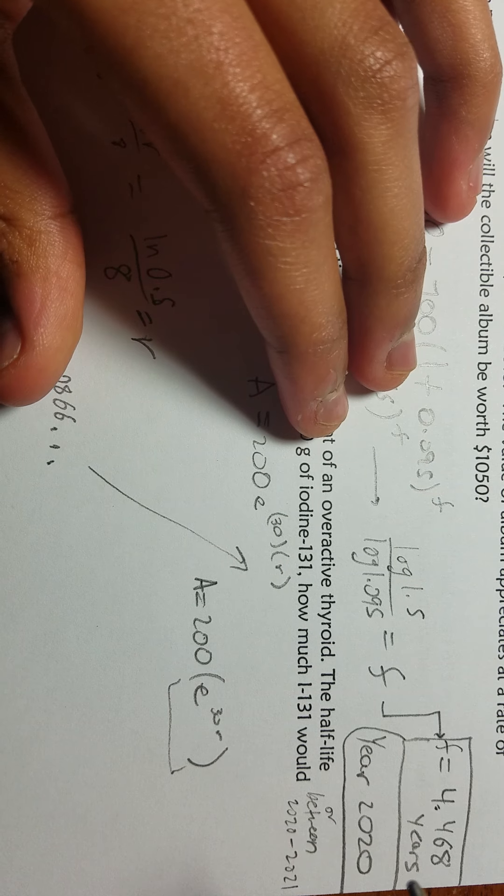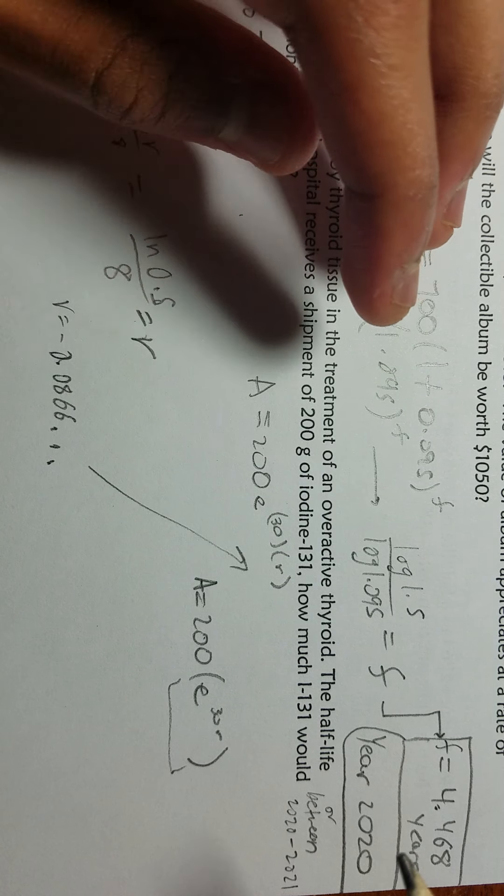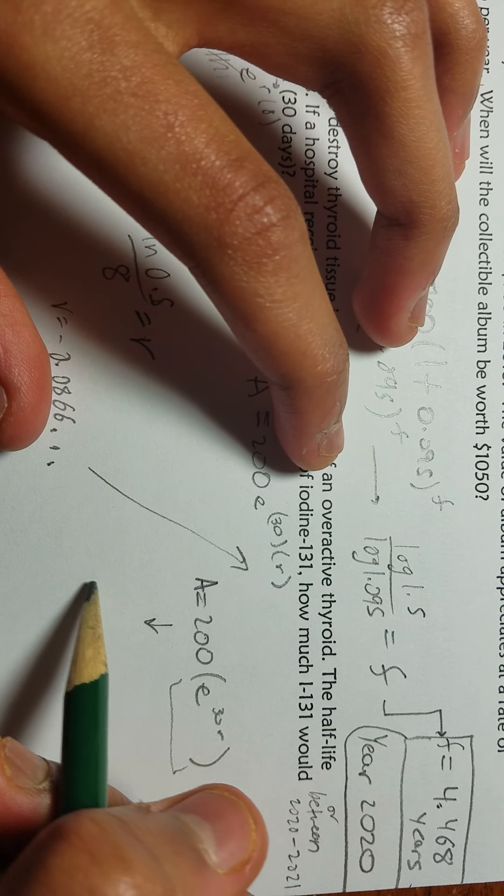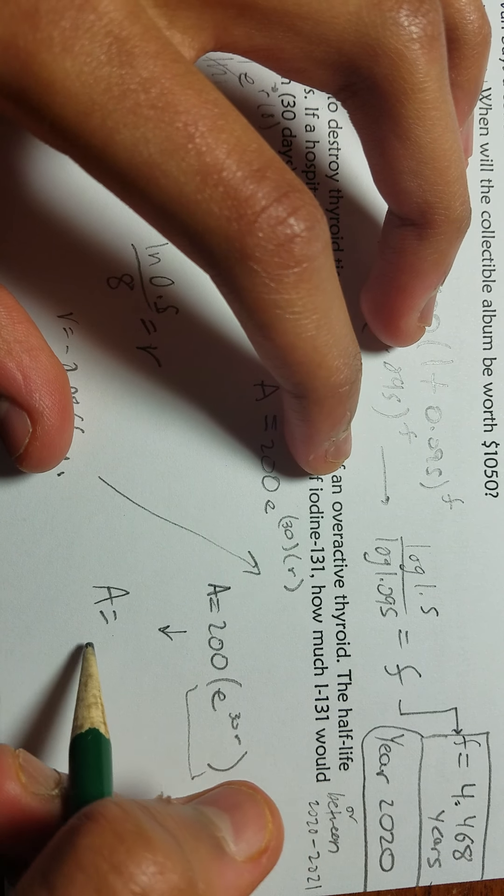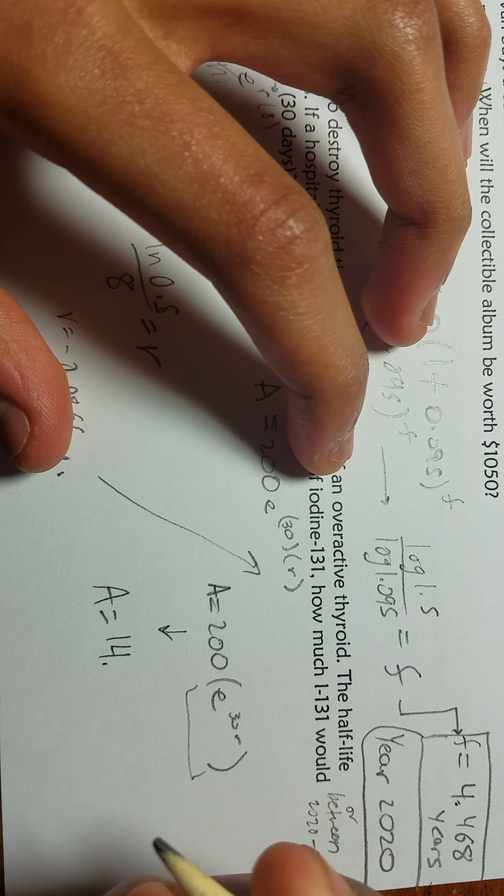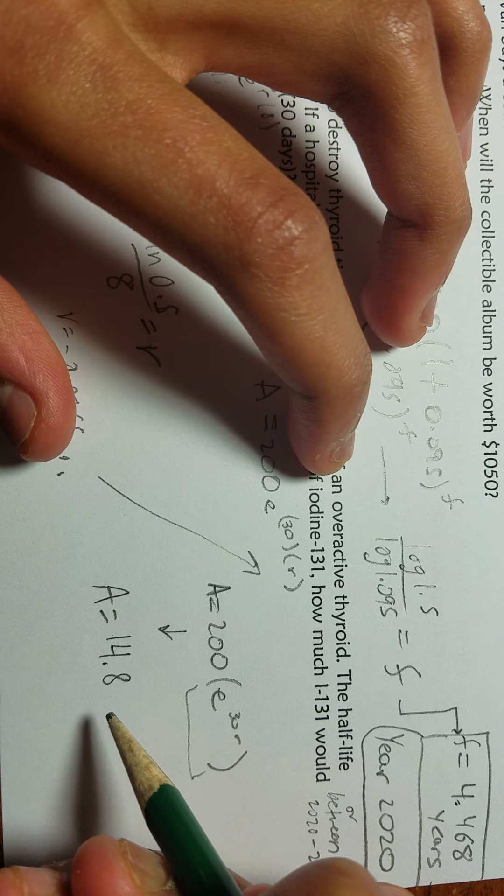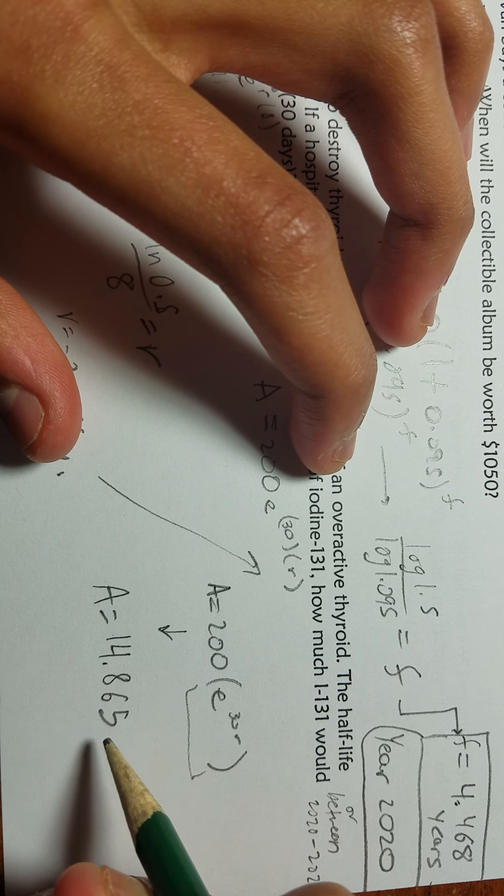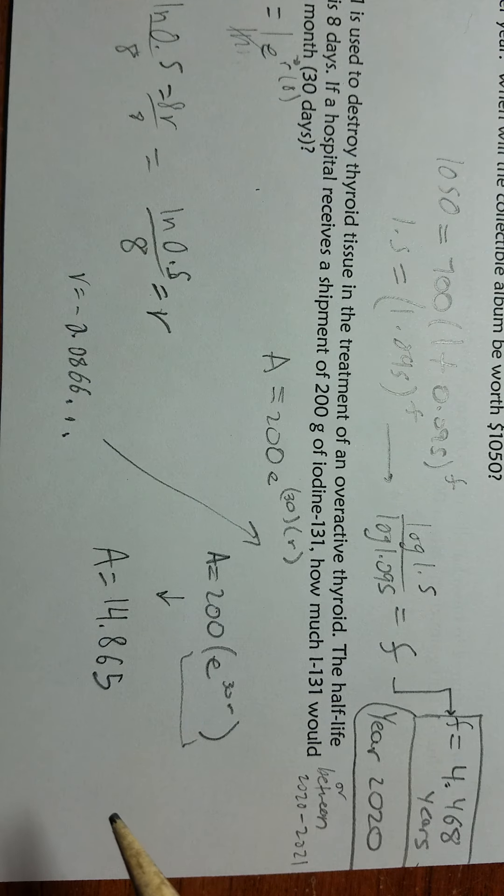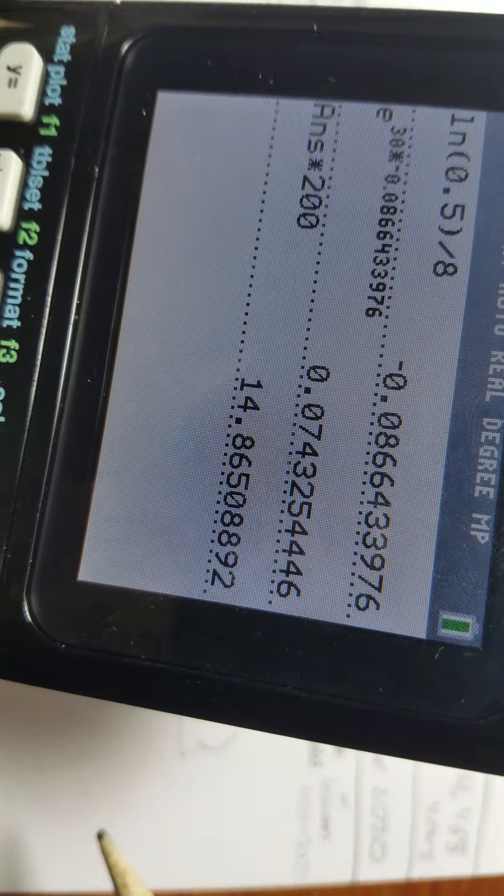Even if you're doing the SAT, you'll be given a calculator probably for these kind of questions. So now you've already got your A equals 14.865 right here, rounded to the thousandths.